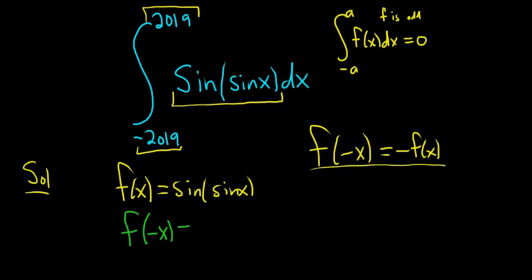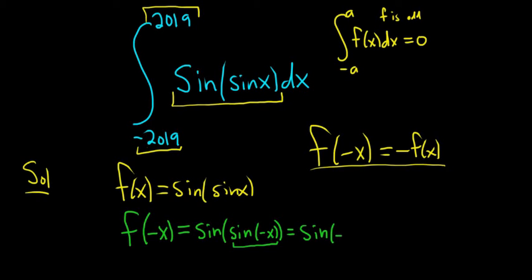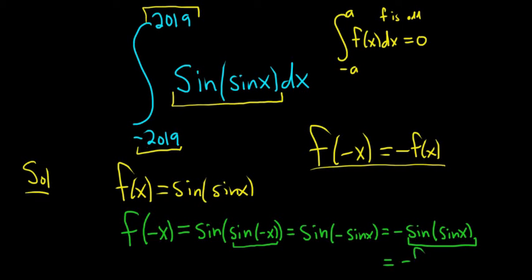f of negative x equals the sine of the sine of negative x — just replacing all the x's with negative x. Since sine is an odd function, sine of negative x equals negative sine of x, giving us sine of negative sine of x. And again, since sine is odd, we pull out the negative to get negative sine of sine of x, which is exactly negative f of x.